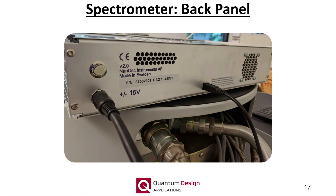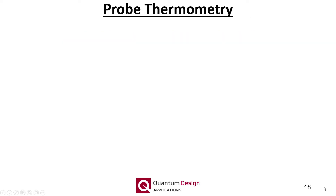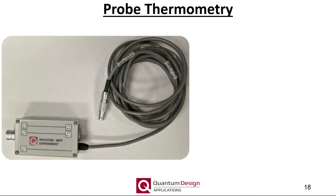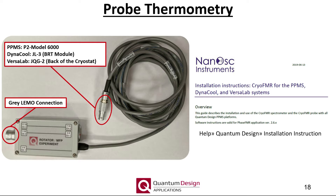As far as the back panel connections are concerned, ensure the power and USB connections are made. It is strongly recommended to connect the Nanosk instrument to the same computer that is running MultiView. Finally, ensure the unit is switched on. Probe thermometry is handled by the standard 12-pin sample chamber wiring connections at the bottom of the PPMS sample chamber and the rotator MFP pass-through cable. This end connects to the standard gray lemo connection on the PPMS, and this end to one of the ports listed here, which depends on the specific flavor of PPMS being used. The system is shipped with a configuration file that converts the CERNOX sensor resistance into a temperature. Detailed instructions can be found in the document accessible from the Help menu in the Nanosk FMR software program.